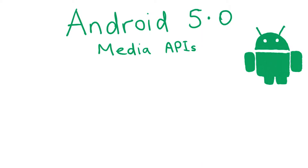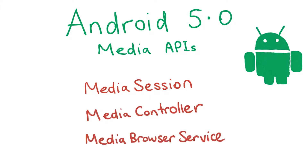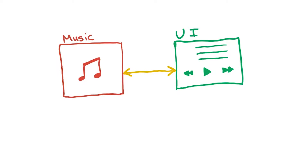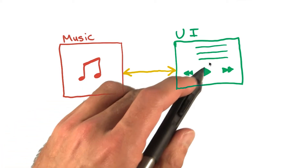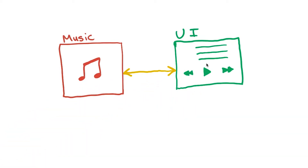Android 5.0 introduced a new way of writing media playback applications, based on media session, media controller, and media browser service classes. One of the nice features of this API is that apps can be abstracted into two components. One part stores and plays back the media, and the other part provides a user interface to allow the user to select the item to play, and to pause, next track, etc.